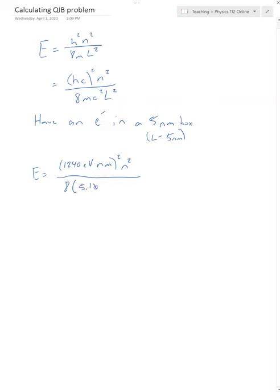mc squared for an electron, you can look it up in your book, but it's just 5.1 times 10 to the 5th electron volts. It's 5.11, right? Let's make sure I got this right. Yep. All right.